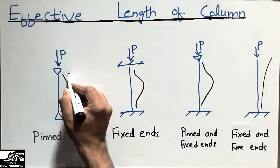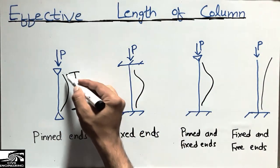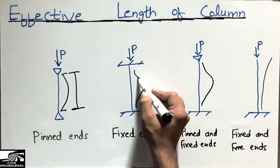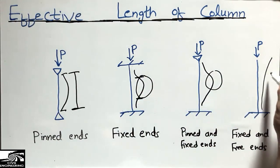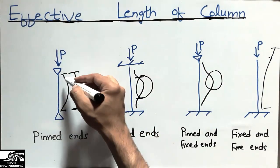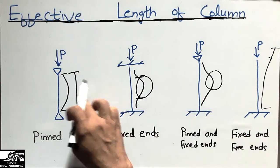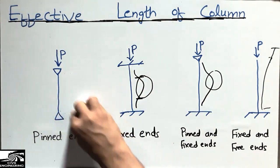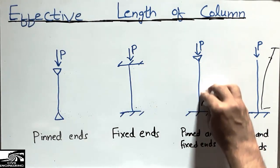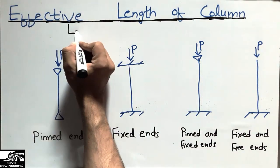The effective length of the column is the distance between successive inflection points. This is one inflection point, and this is another inflection point. This distance is called the effective length because it shows the change of slope.